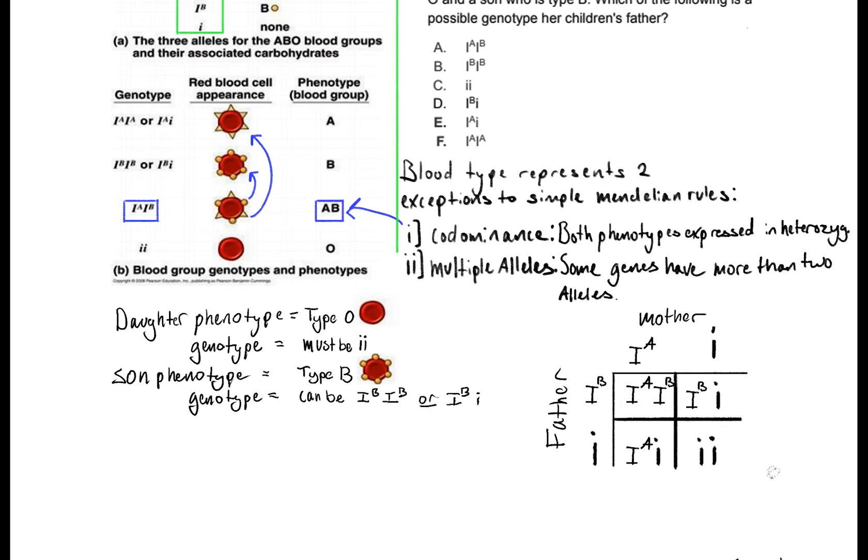And then I'm going to carry it over and fill in the rest of the Punnett cross here so we have IA, IB which would result in an A, B blood type phenotype. We also have a IB, little i genotype here which would result in our son's phenotype of type B.